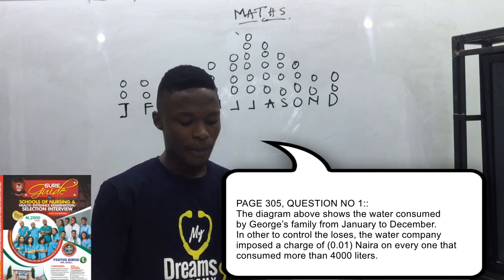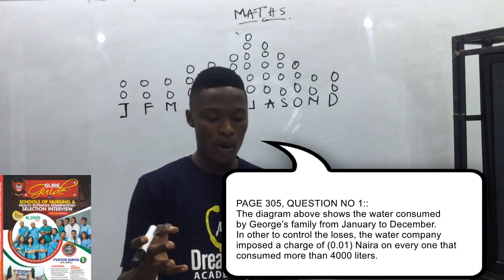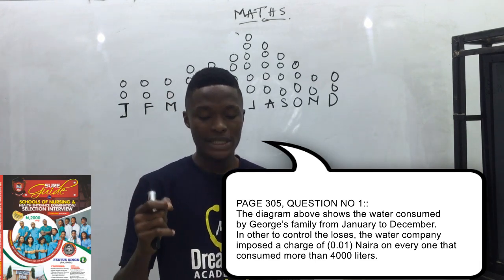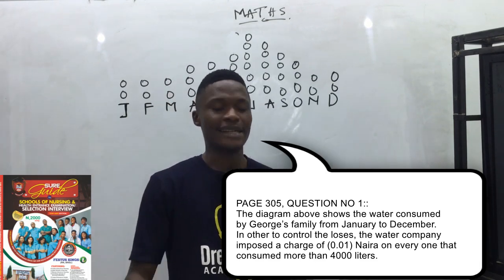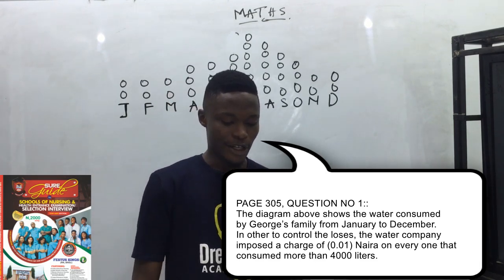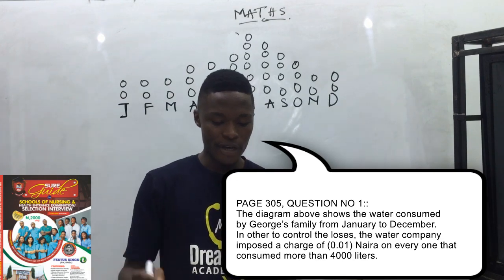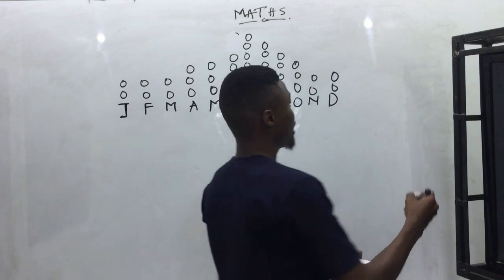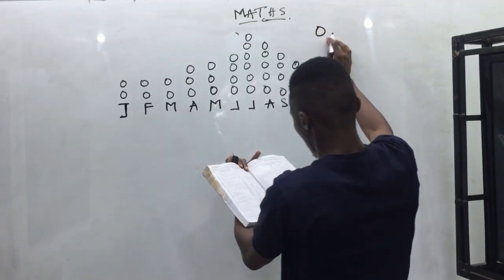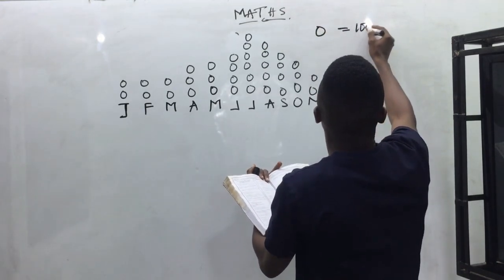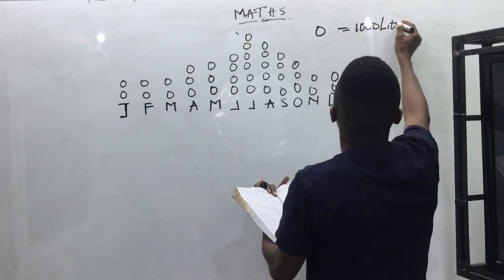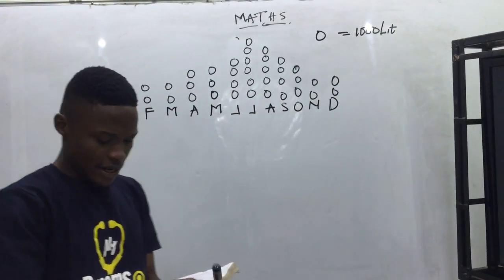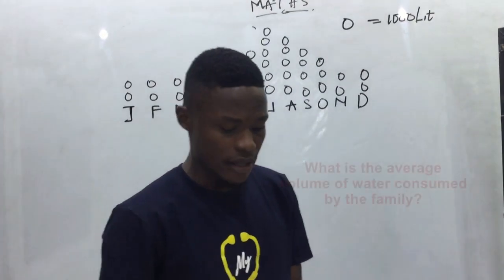In order to control the losses, the water company imposed a charge of 0.01 Naira on every liter more than 4,000 liters. The key shows that one circle is equal to 1,000 liters.